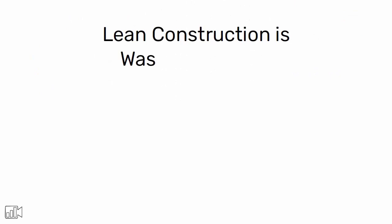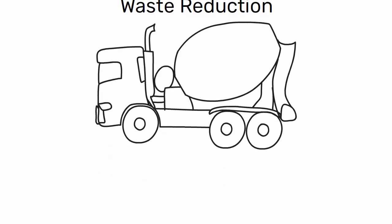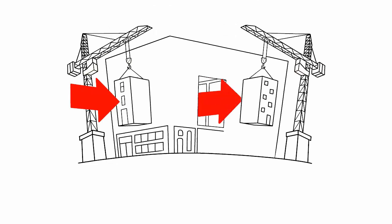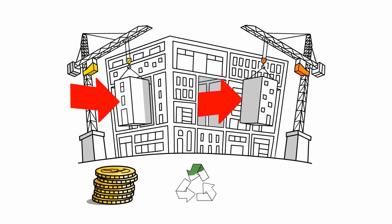Another important aspect of lean construction is waste reduction in inventory and transportation. By reducing the amount of materials on site and ensuring that deliveries are made only when needed, construction companies can reduce costs, minimize waste, and increase efficiency.